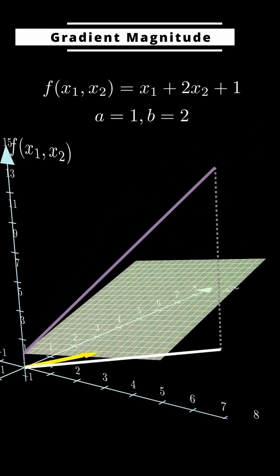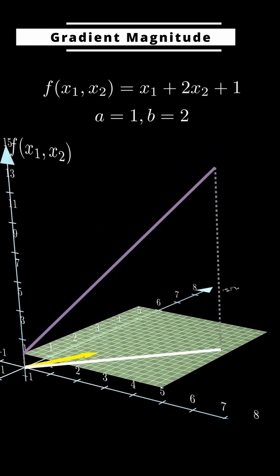For example, this purple line here isn't the gradient. It's just one possible slope of the surface.